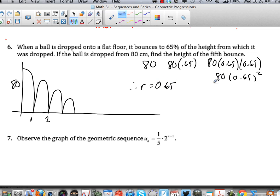Now I just need to figure out what term do I need. I need the height of the fifth bounce. So do I need U5 or U6? Or U4? Which one do I need here? Well, let's see. The second term is the height of the first bounce, isn't it? The third term is the height of the second bounce. So what term is the height of the fifth bounce? It must be the sixth term.